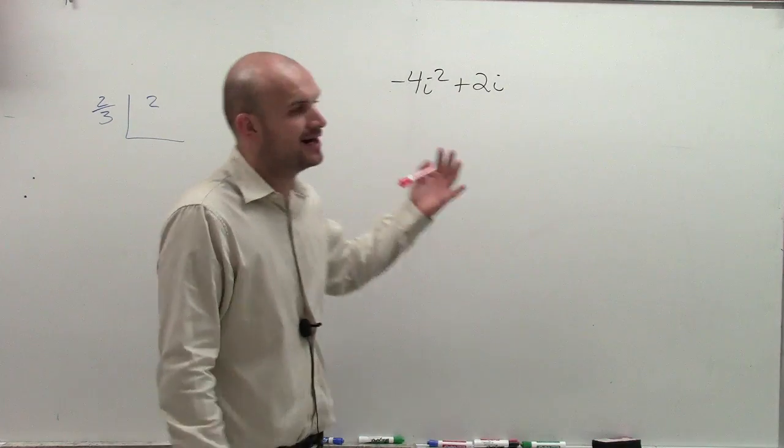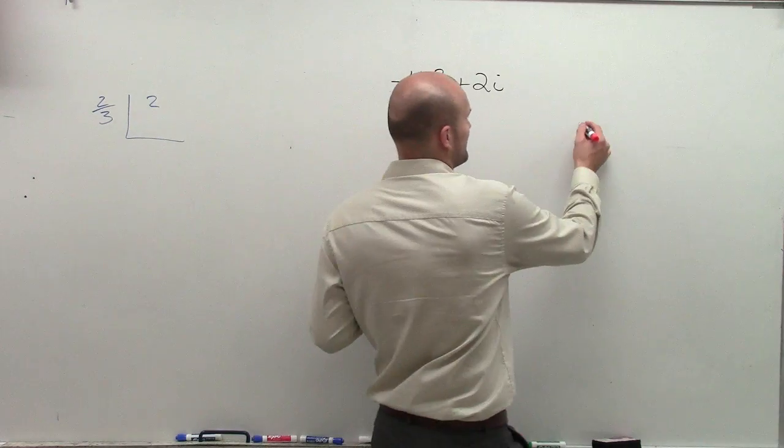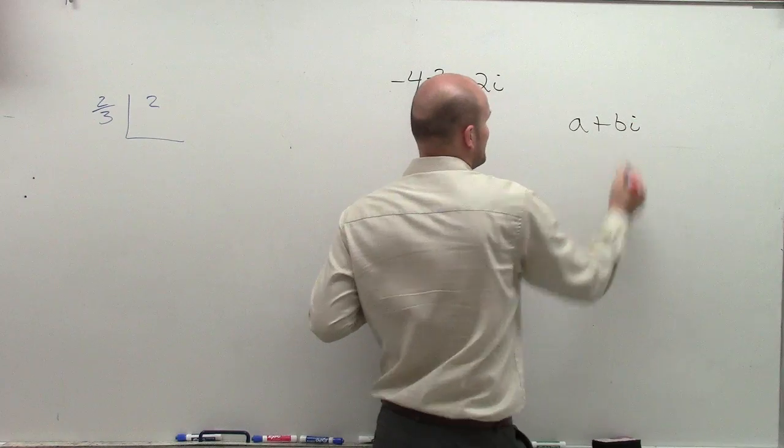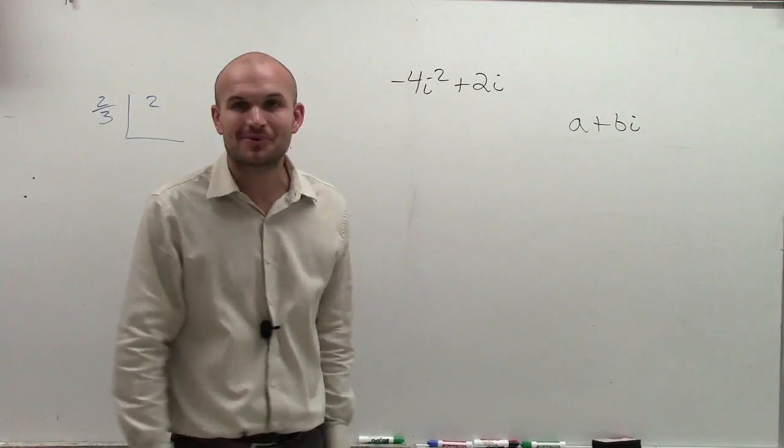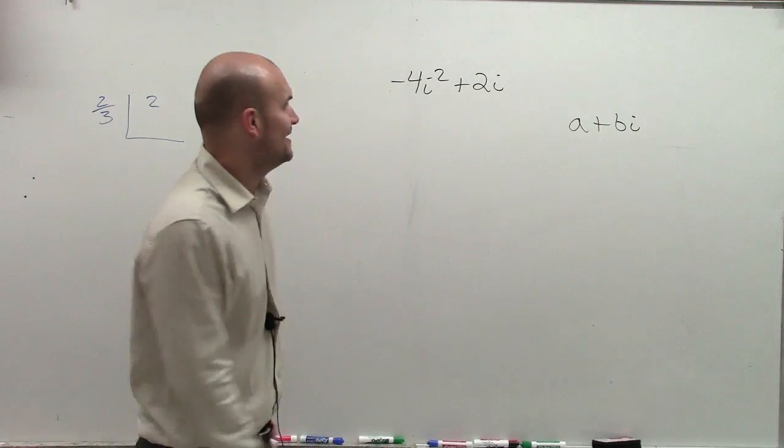So to do that, remember standard form of a complex number is a plus bi, right? So I can only have one i, and I can't have an i squared.